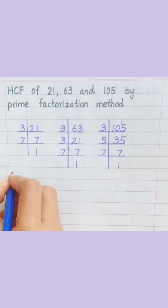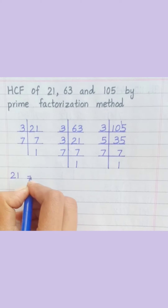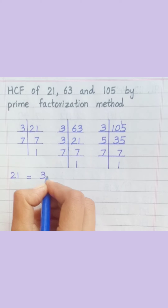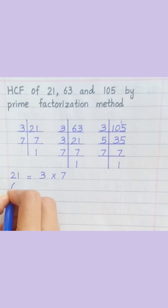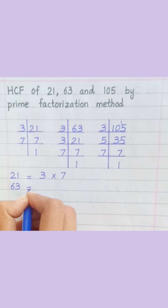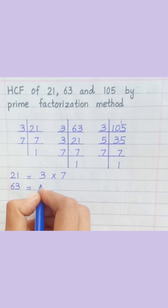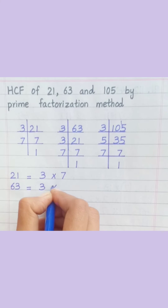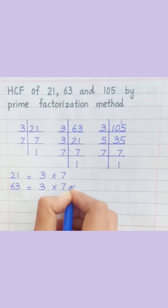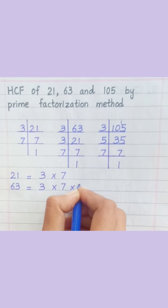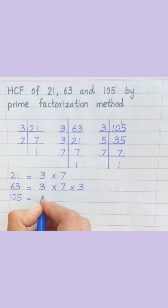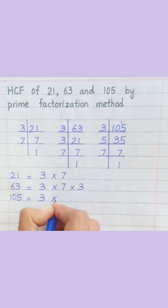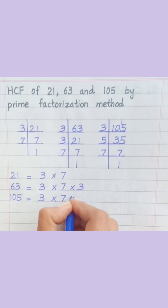21 equals 3 multiply 7. 63 equals 3 multiply 7 multiply 3. 105 equals 3 multiply 7 multiply 5.